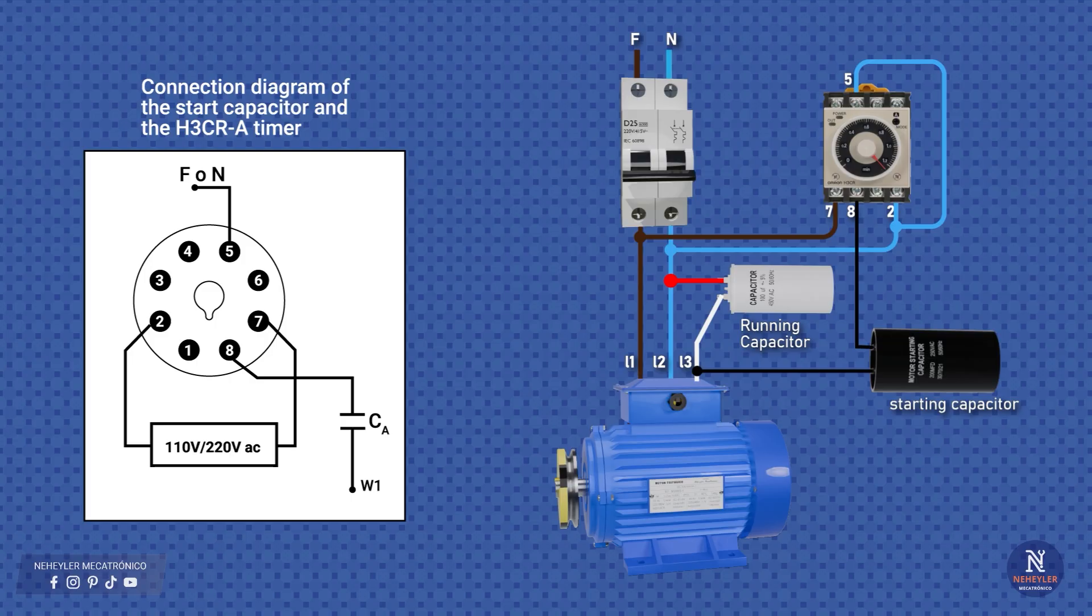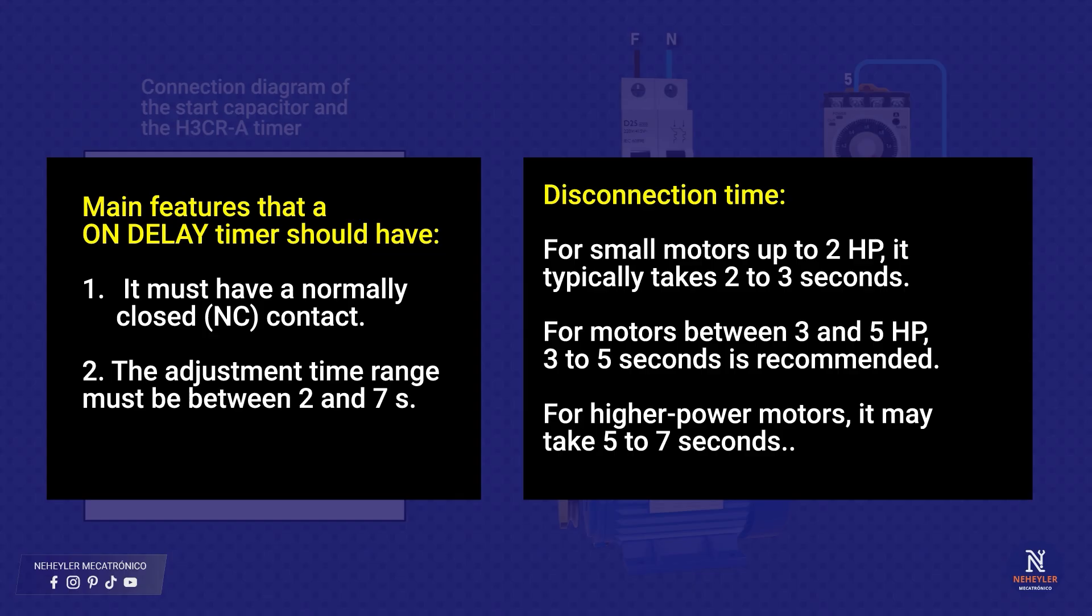Now, an important clarification, if you want to use another type of timer, you must check two main characteristics. That it has a normally closed contact, since we need it to disconnect the start capacitor, and that the adjustment time range includes between 1 and 10 seconds, which is the ideal connection time for most motors.